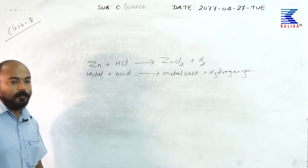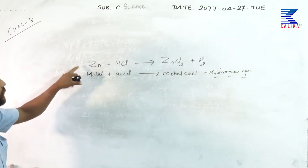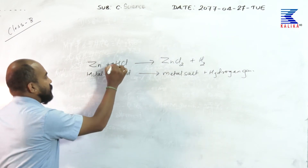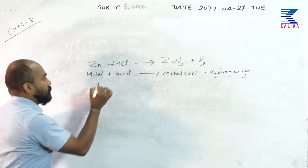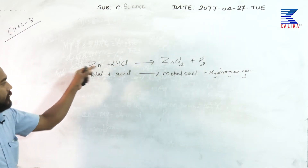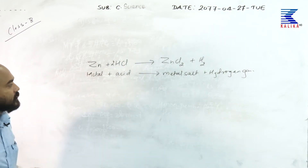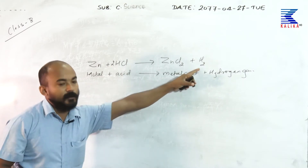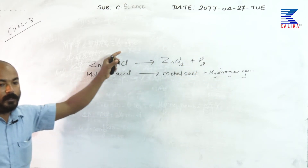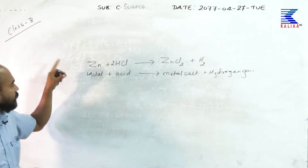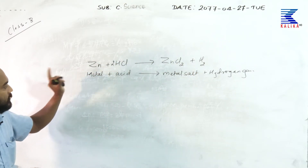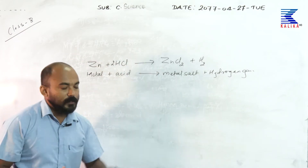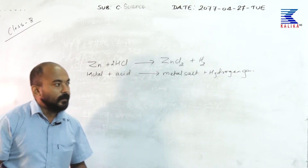Let us balance this equation: metal salt plus hydrogen gas. Count the number of atoms — the number of hydrogen is 2 on both sides, number of chlorine is 2 on both sides, and number of zinc is 1 on both sides. So this equation is balanced.